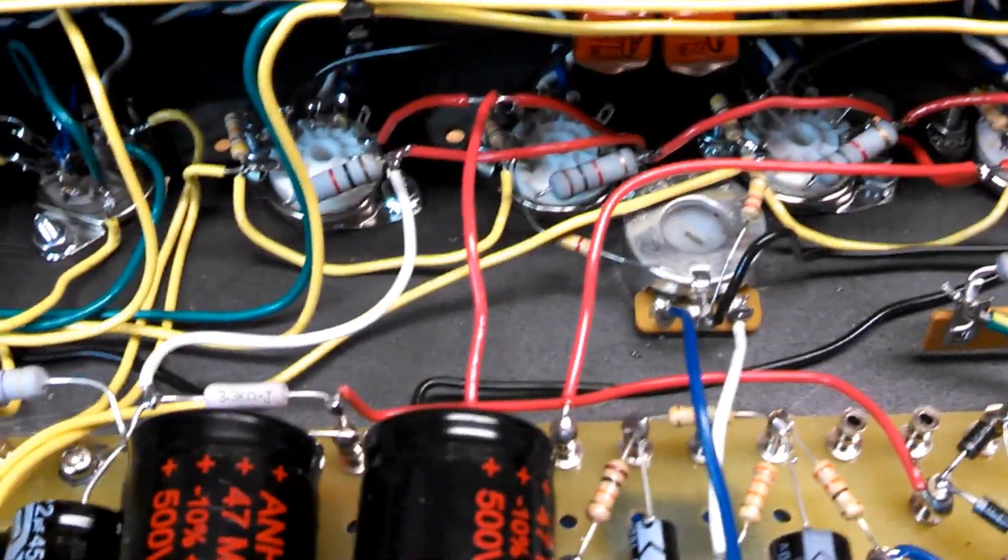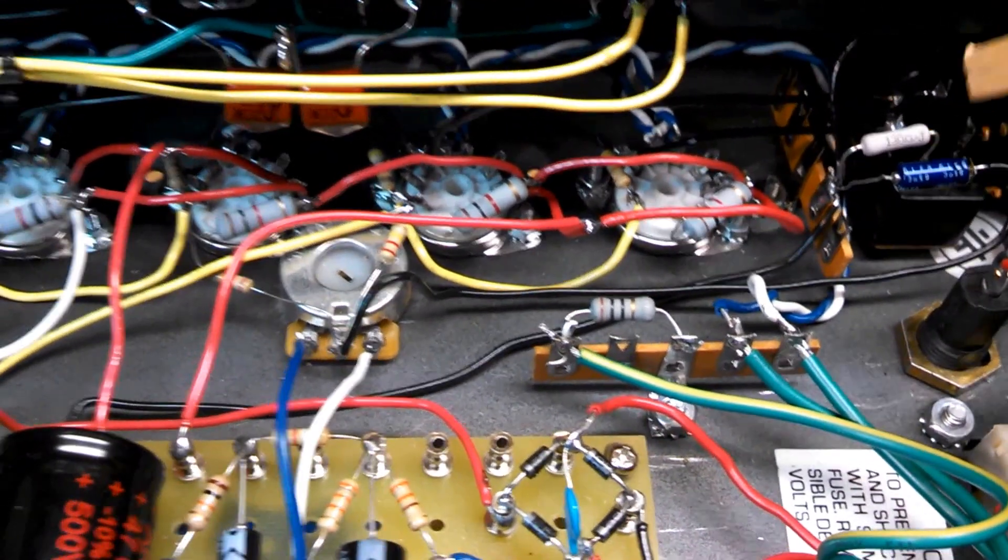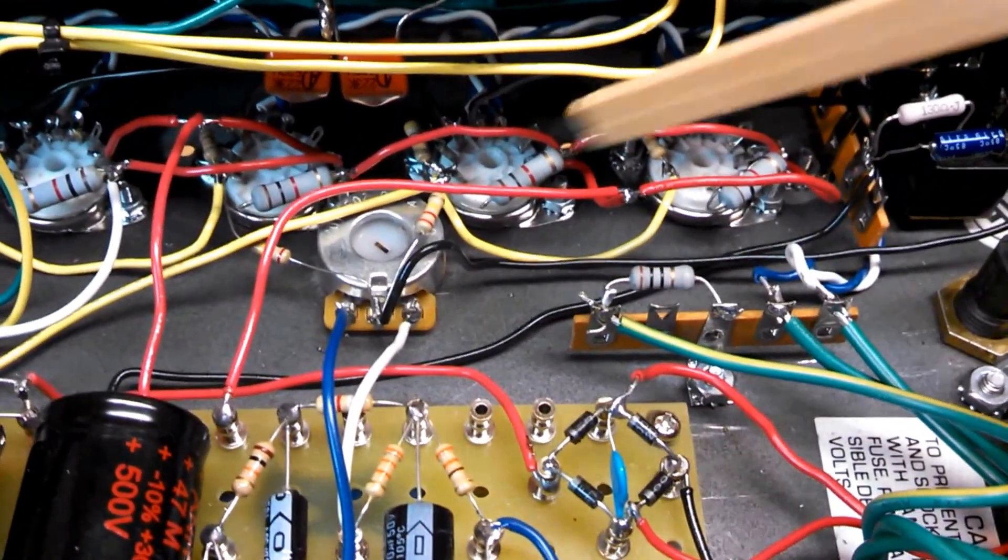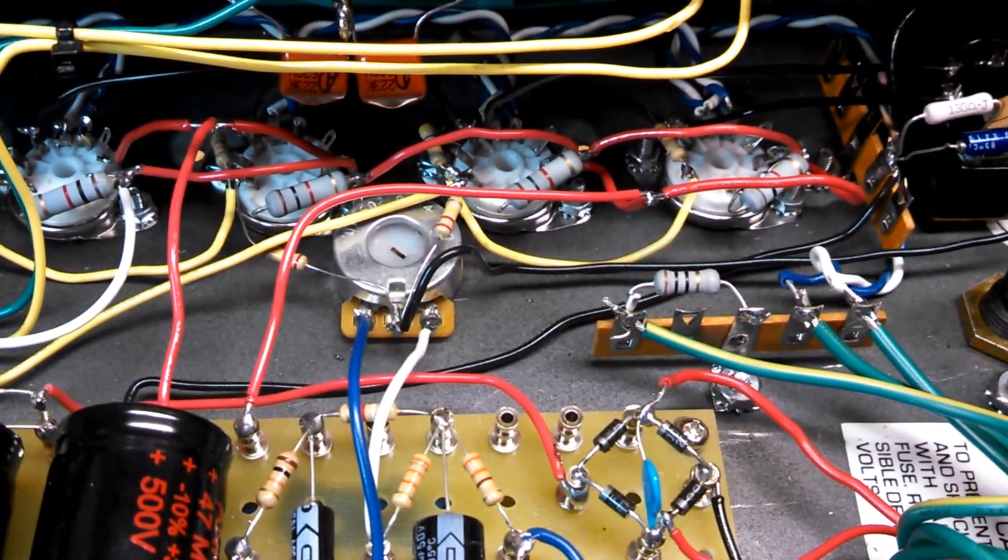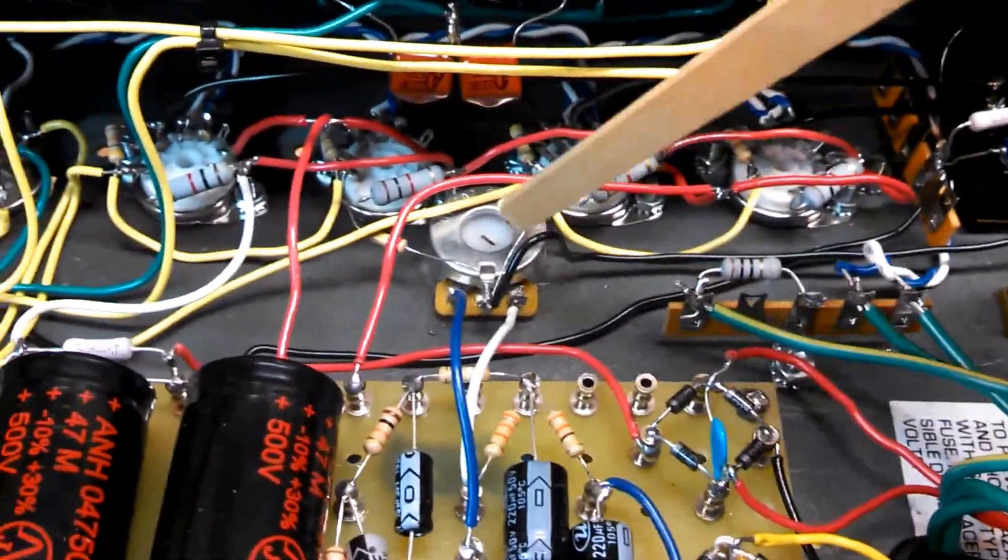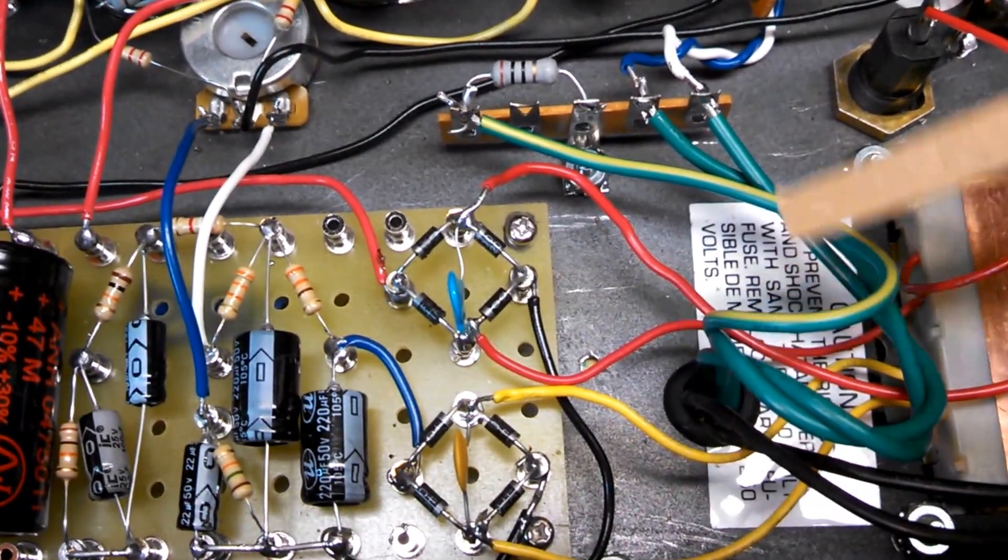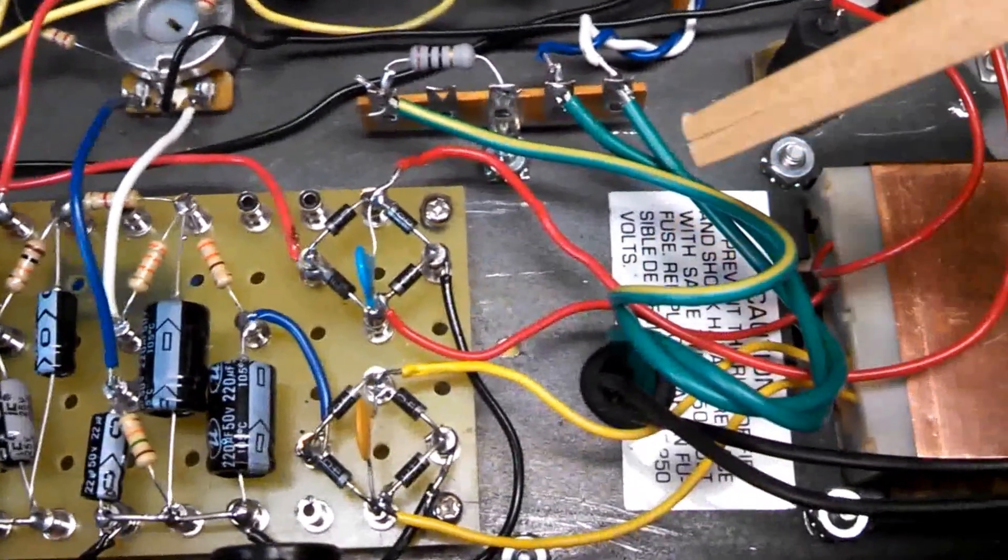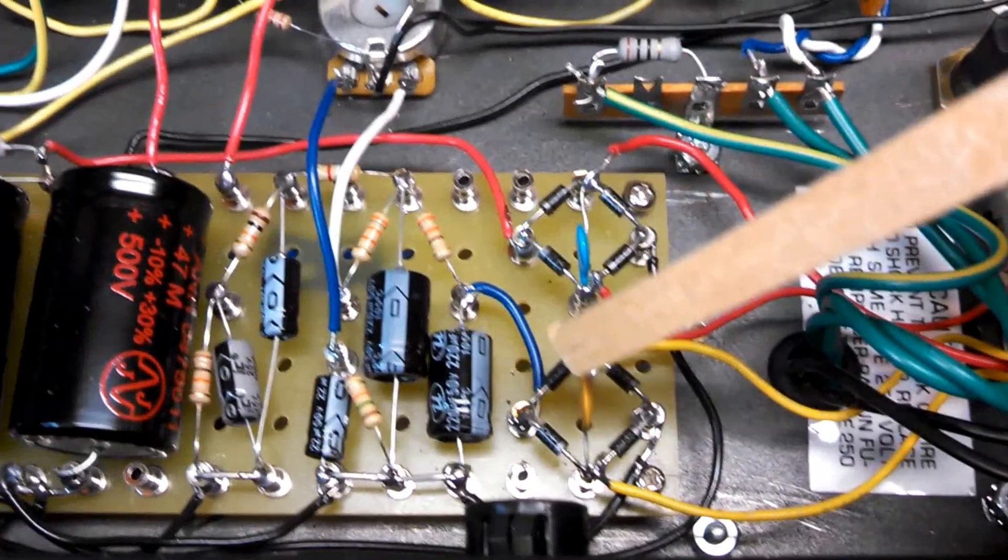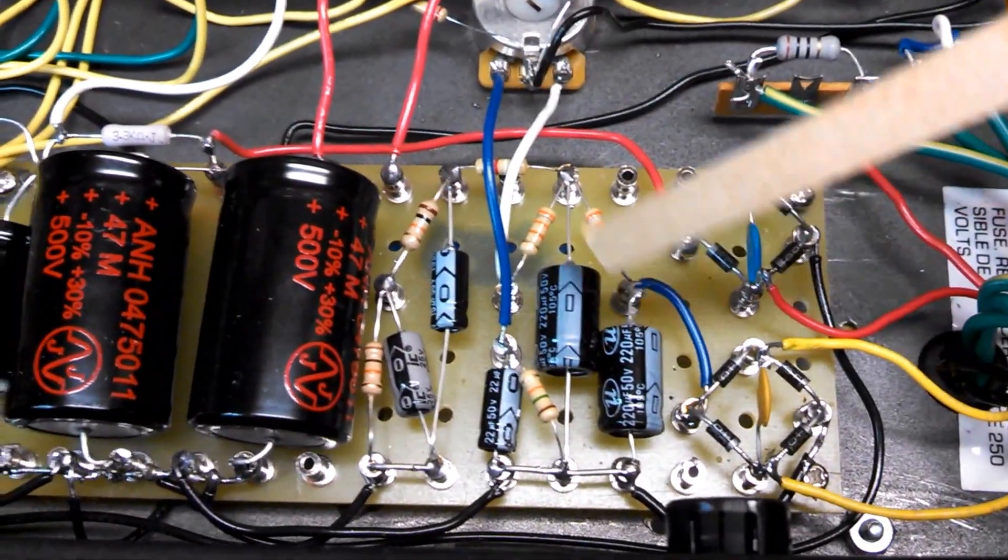But definitely in fixed bias you need to readjust the bias when you do that, so this allows me to do that. The other thing is that this switch is set up so that there's only two tubes powered, even if I had all four populated in the sockets. Only two tubes for the cathode bias because I've just got one resistor here, and then fixed bias is adjustable again with this pot.